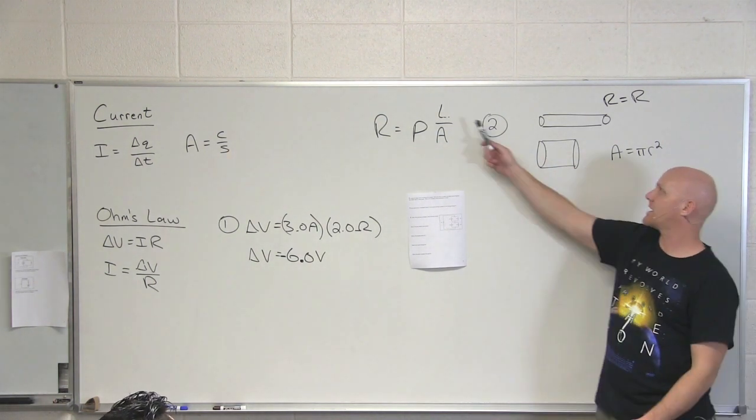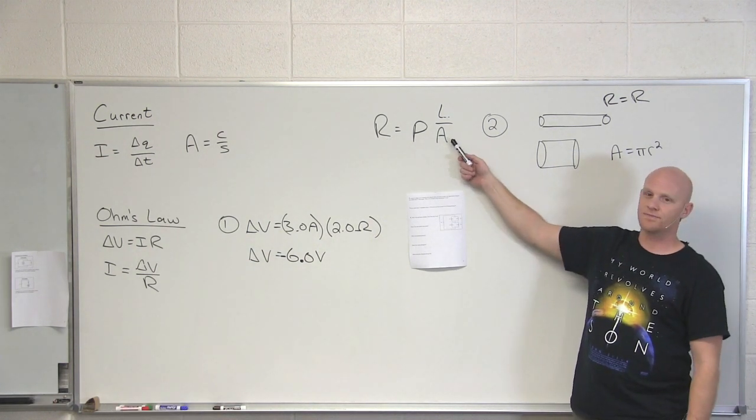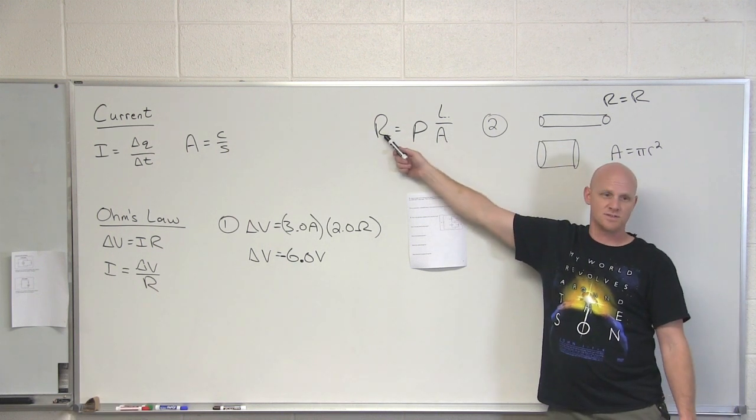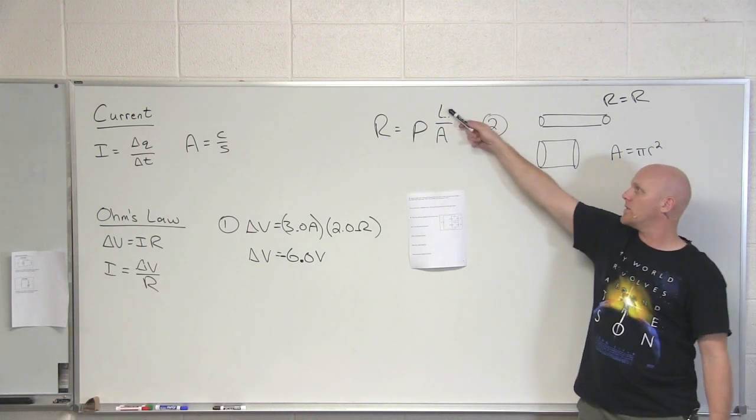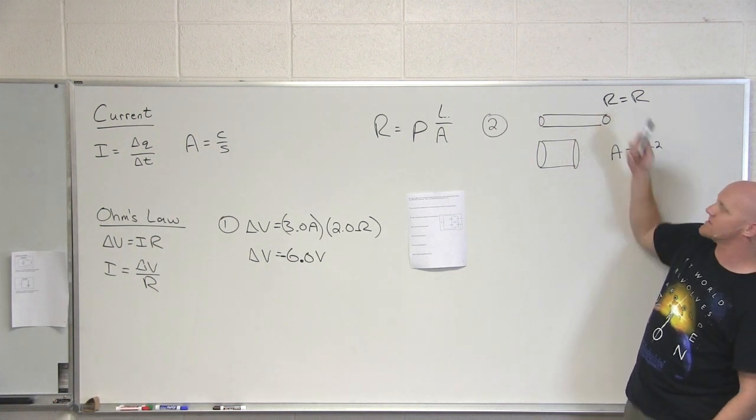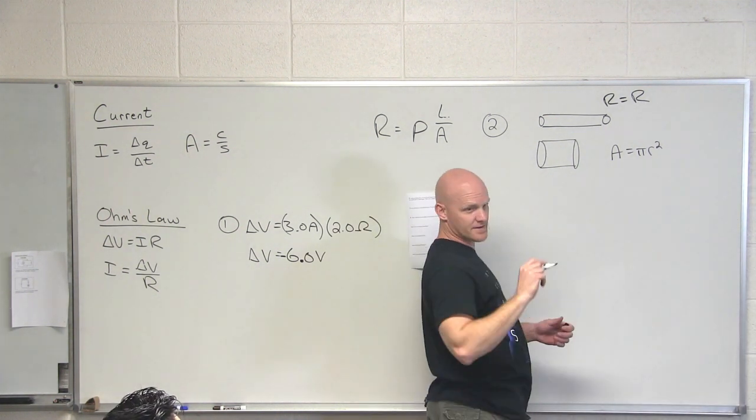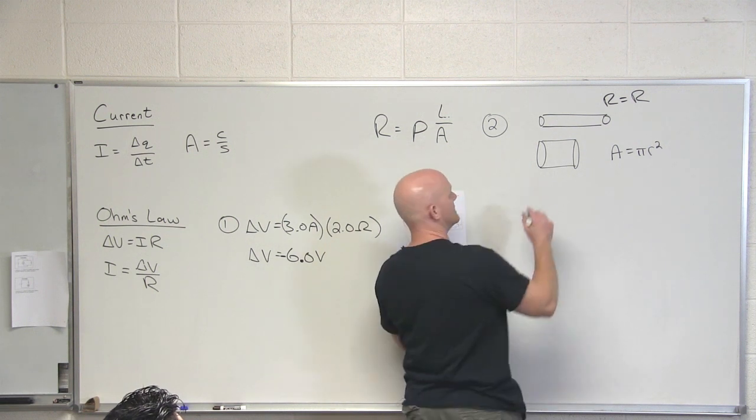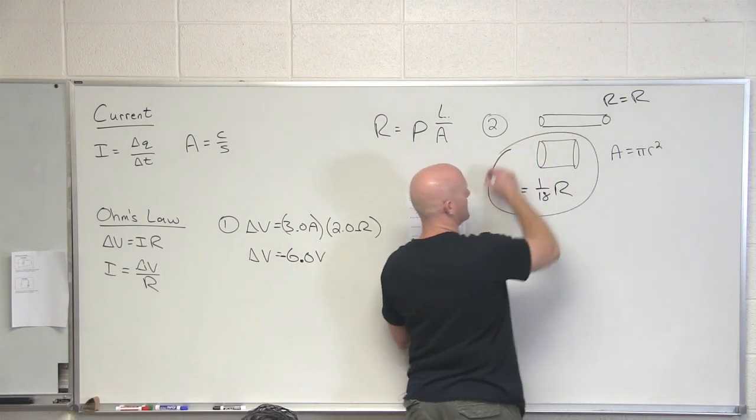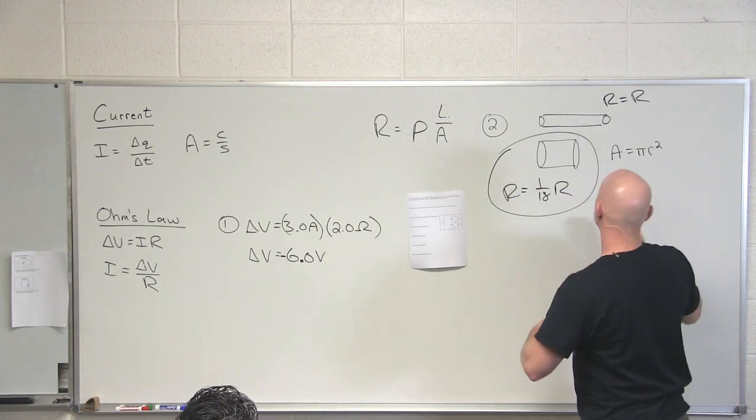So in this case, by cutting the length in half, that cut the resistance in half. So by tripling the radius, that increased the area, cross-sectional area by a factor of nine, and that reduced the resistance by a factor of nine. Factoring both of those in, what would be the value of the resistance in this wire if the old wire had a resistance of R? Not one eleventh. It's multiplicative. One half and one ninth gets you one eighteenth R. So the resistance in this wire would be one eighteenth R. Would you mind writing it out? Yeah, we could totally do that.